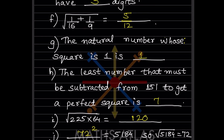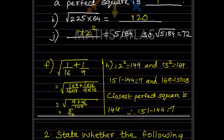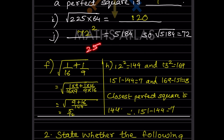For √(1/16 + 1/9), take the LCM of 16 and 9, which is 144. So 1/16 + 1/9 = (9+16)/144 = 25/144. The square root of 25/144 is 5/12, since both 25 and 144 are perfect squares.